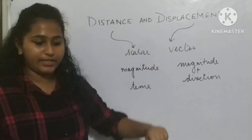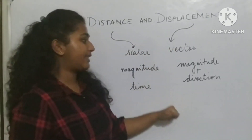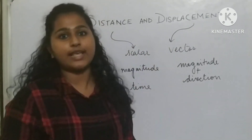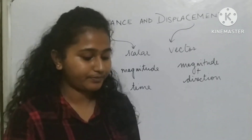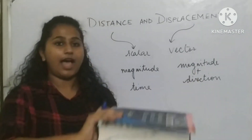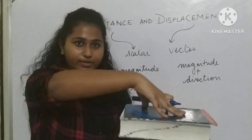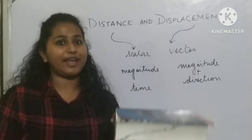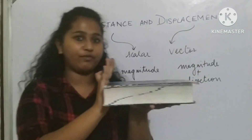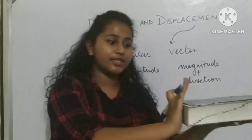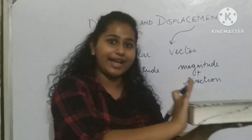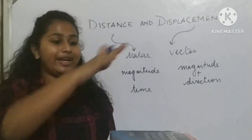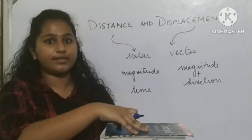In the case of a vector quantity, let's take the example of force. Force has a direction — I can apply force downwards, upwards, or sideways. So it has a direction along with a magnitude, for example, 10 newton force downwards.